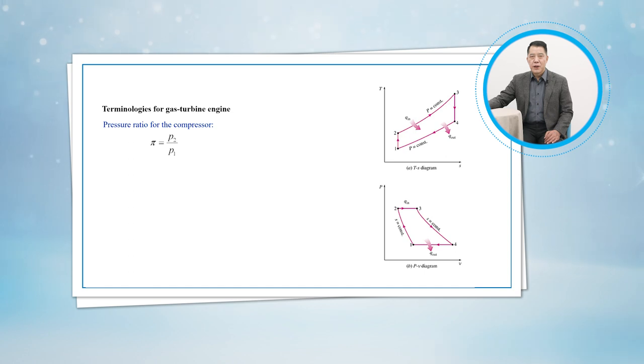For the compressor, the second is the temperature ratio of the cycle. The third is the back work ratio of the gas turbine engine.